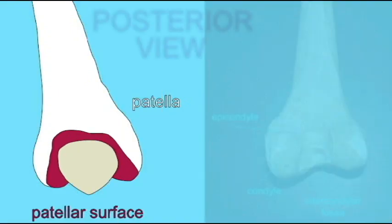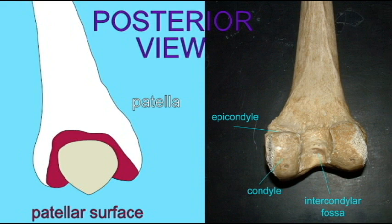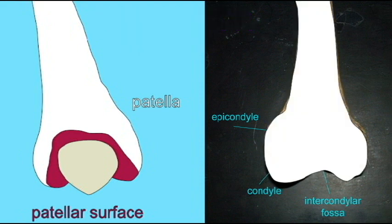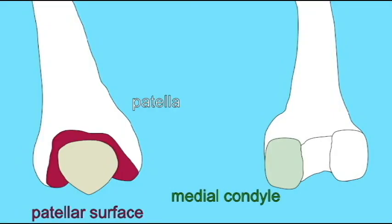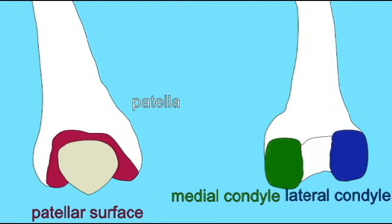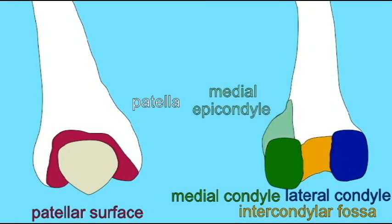The posterior view of the femur at the distal end possesses two condyles, which allow flexion of the tibia and allow the knee to bend. These two knobs — a medial and lateral condyle — are evident, separated by a depression known as the intercondylar fossa. There are also two regions known as epicondyles, which serve for muscle attachment on the medial and lateral sides.